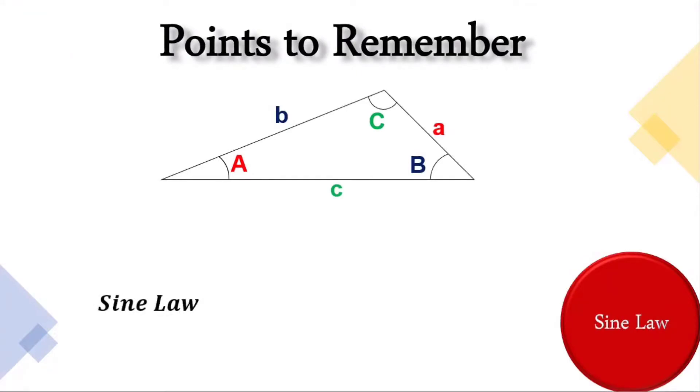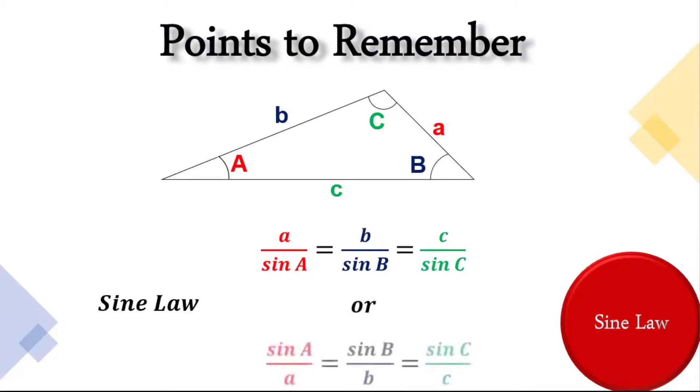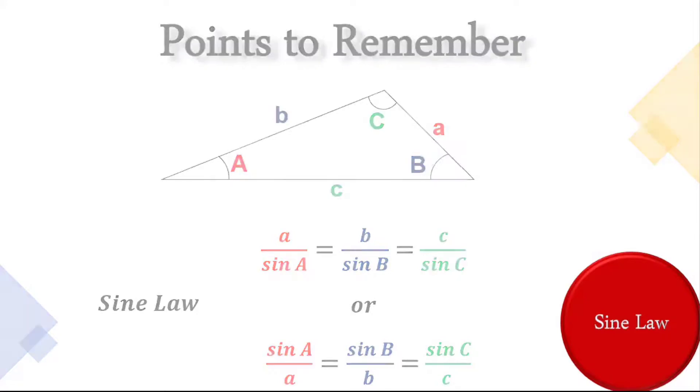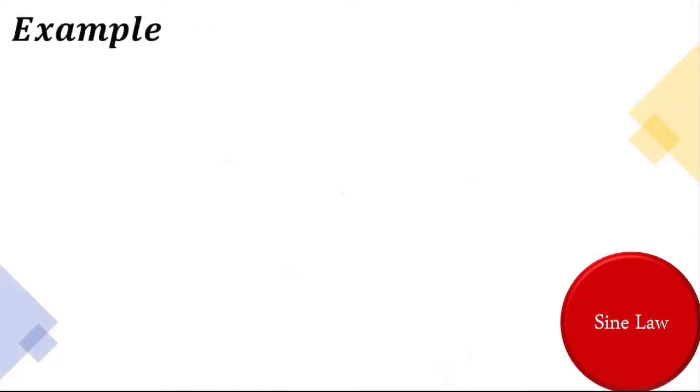So we could simply write this as a over sine A is equal to b over sine B is equal to c over sine C. Or we can rewrite this as sine A over a is equal to sine B over b is equal to sine C over c. We will be using this in an example.